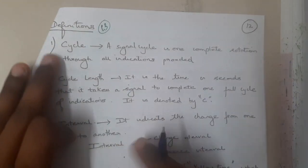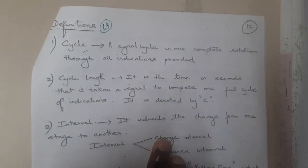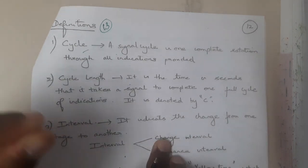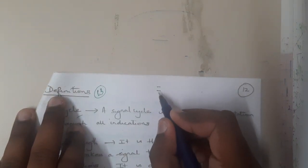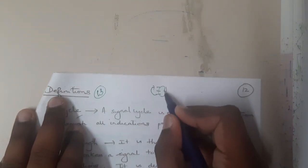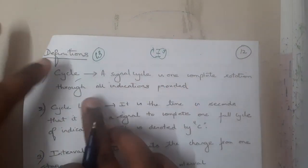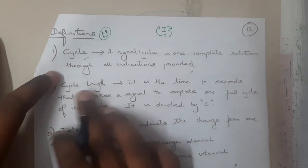The first definition is for cycle. A signal cycle is one complete rotation through all the signals — basically from red to yellow, yellow to green, and green to red. So a cycle is one complete rotation through all the indications provided.